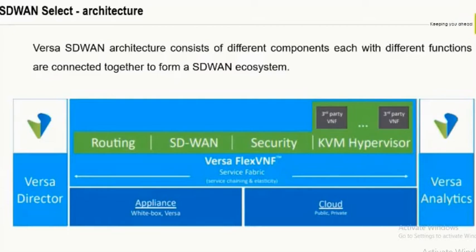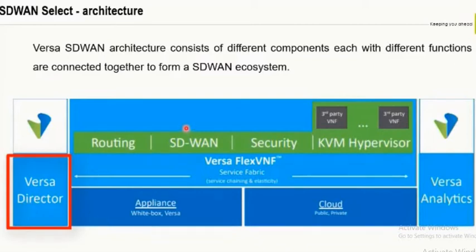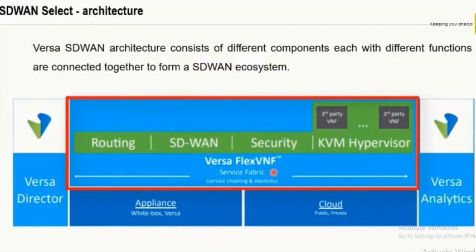Looking at this diagram, let's talk about Versa Director. Versa Director is one of the SD-WAN components used for building configurations and maintaining reachability to the edge appliances. Versa FlexVNF is basically the fabric on which we run all services of routing, SD-WAN, and security. These come in two deployment options.